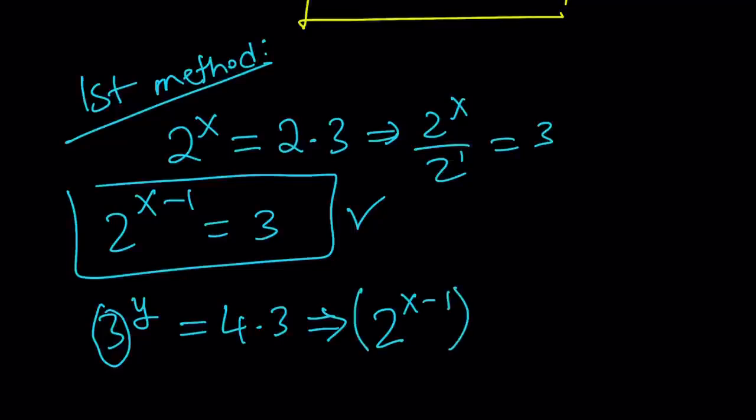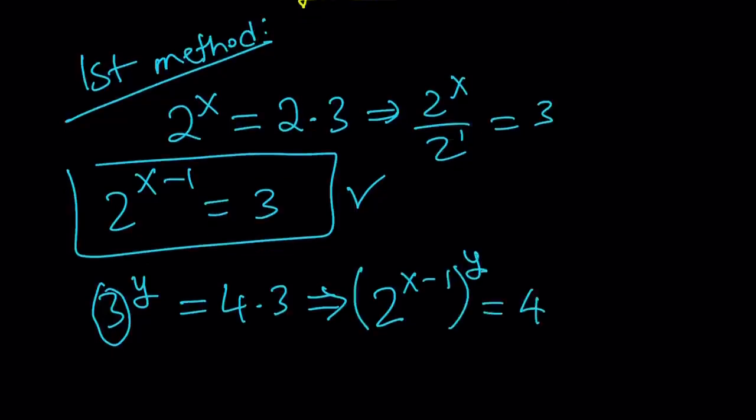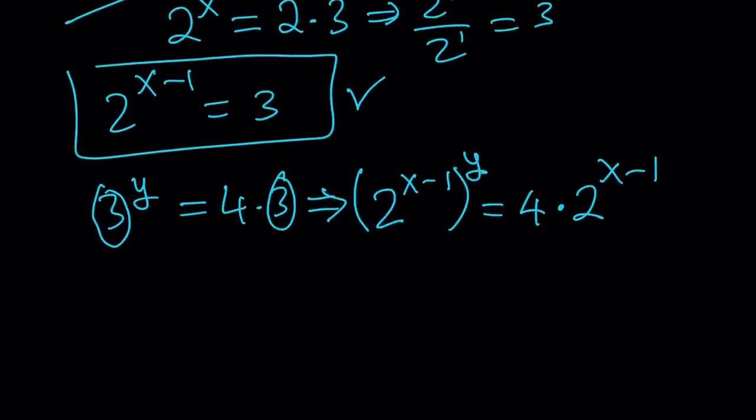So let's go ahead and replace the 3 with 2 to the power x minus 1. Now, we're not getting rid of the y, but we are kind of getting rid of the 3 because we want to end up with powers of 2 only. And again, let's replace this 3 with 2 to the power x minus 1. Now, notice that we no longer have 3s, but everything is a power of 2 here, which is nice. Okay, great. Let's go ahead and simplify this.